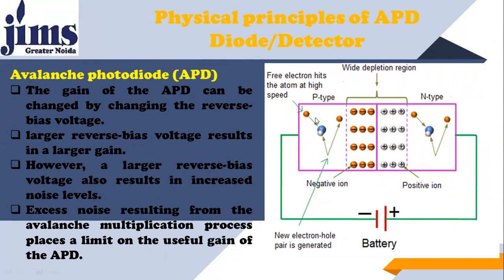Looking at this picture: this is the electron that hits these bonded atoms. Because these free electrons have high velocity — since they are in a high electric field — they hit the bonded atom with high force, causing another free electron to be released from that atom. So two electrons are present — this is the multiplication, a new electron-hole pair. Then this particular electron strikes another atom, and from that atom another electron is freed.